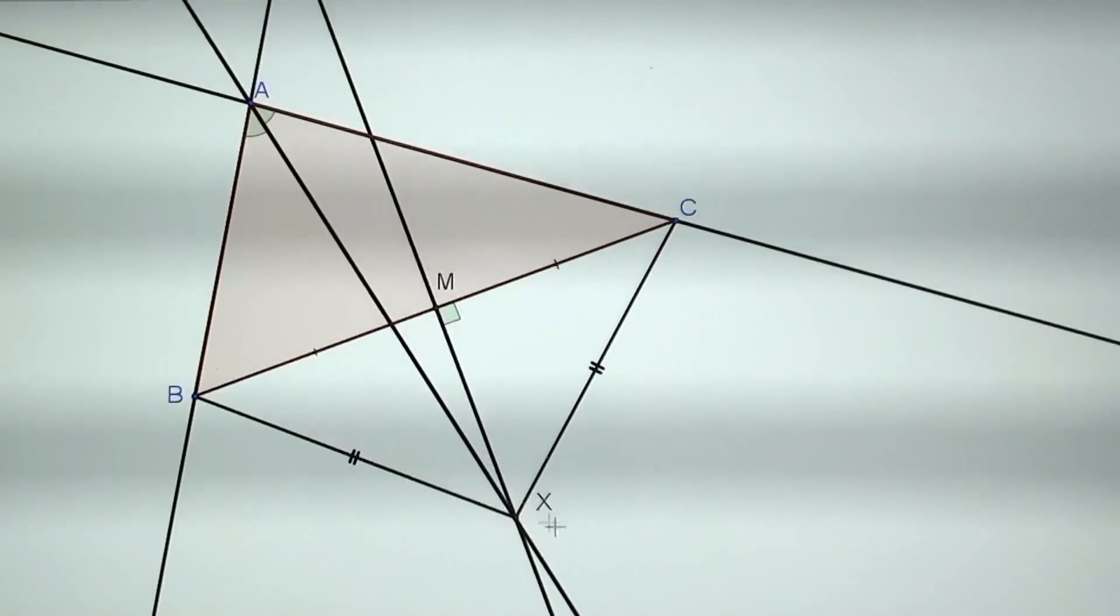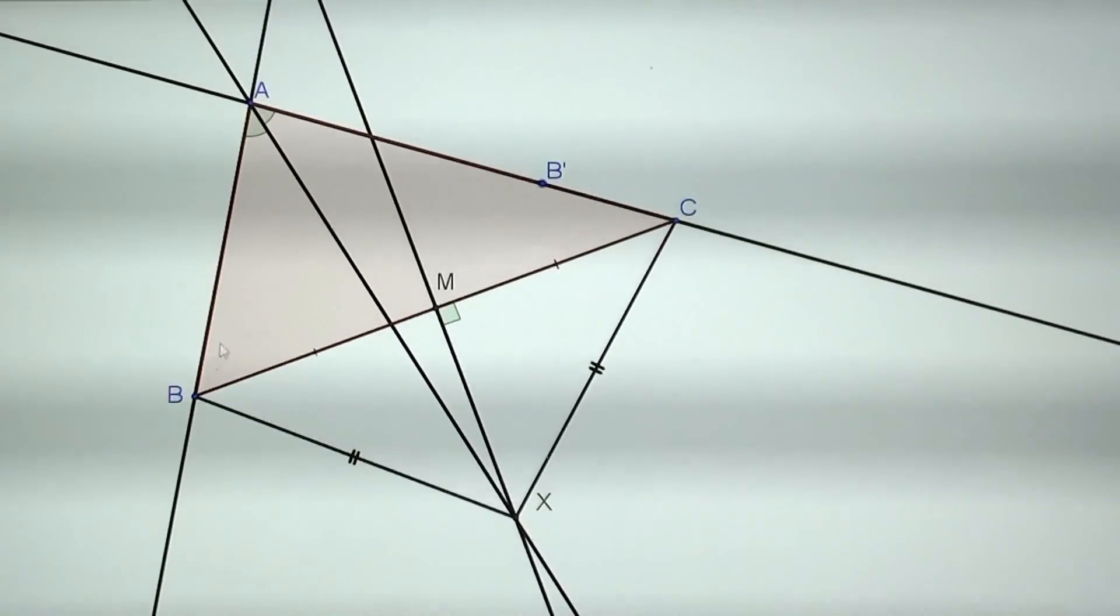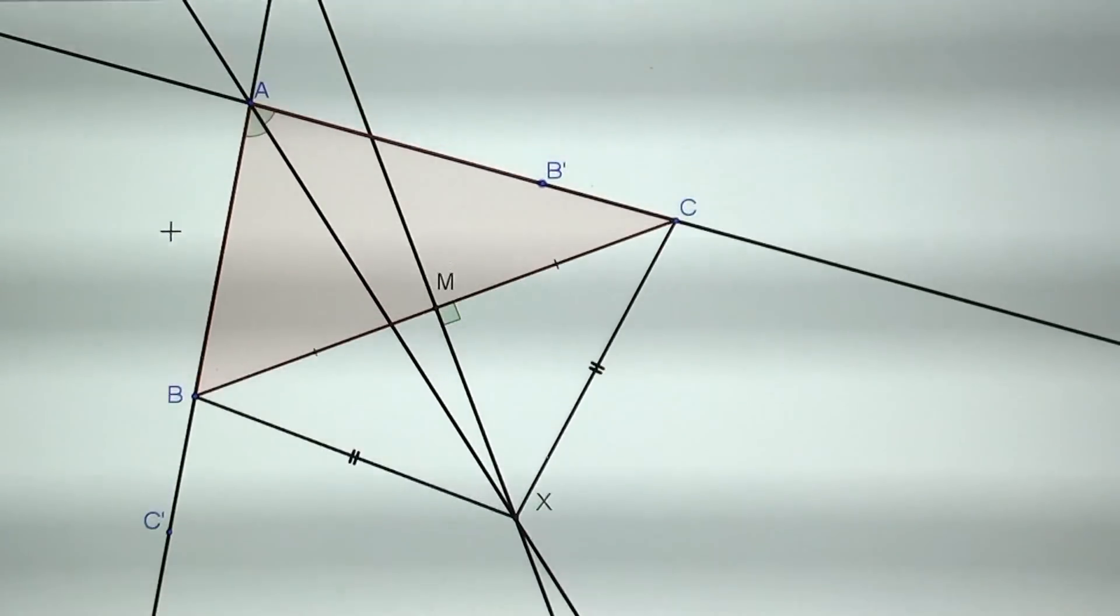I'm going to use this symmetry and make the symmetrical point of B which I'm going to call B prime, which is right here. And also we have the symmetrical point of C which I'm going to call C prime, right here.